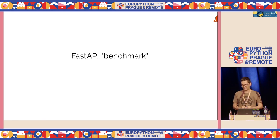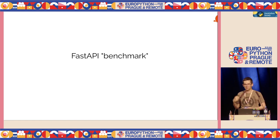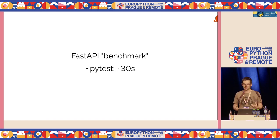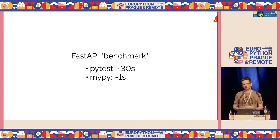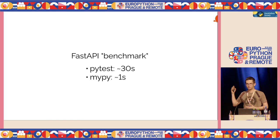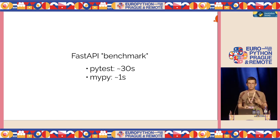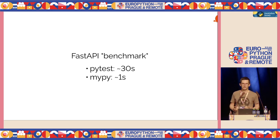I took the FastAPI codebase and ran its test suite — it takes about 30 seconds on my notebook. Type checking that codebase takes just a second. I think this will be true for a very large number of repositories: type checking is much faster than running your whole test suite, so it's much lower latency feedback.